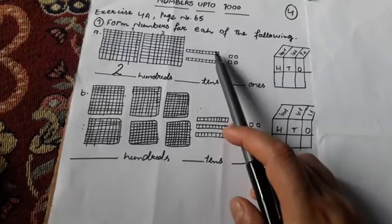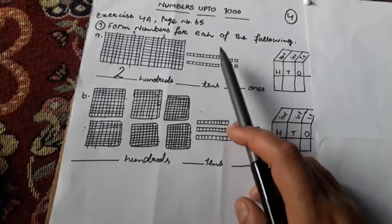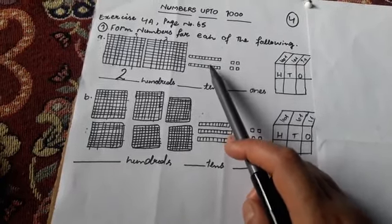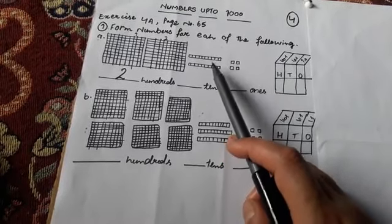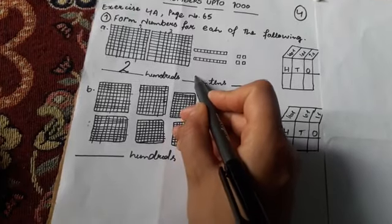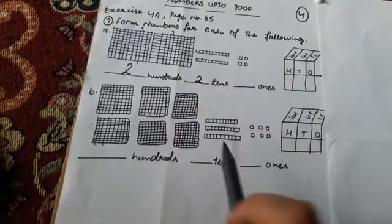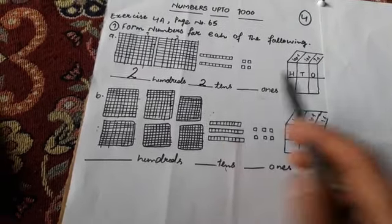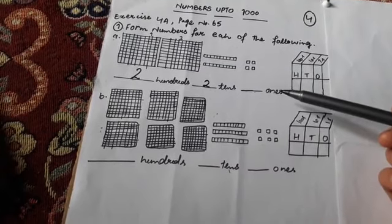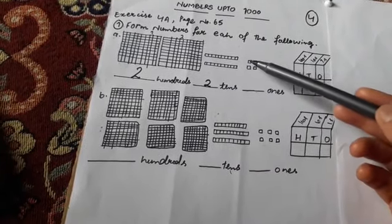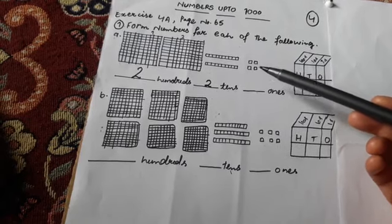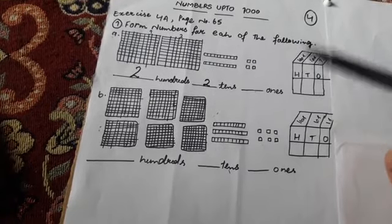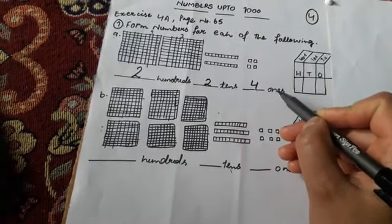Then come the tens. How many tens are here? Here are ten plus ten, meaning two tens — one ten and two tens. The value of two tens equals 20. Then the ones: how many ones are here? One, two, three, and four — it means four ones are here.